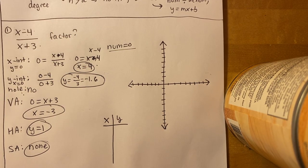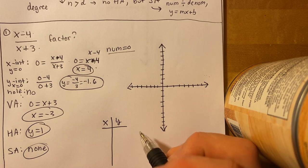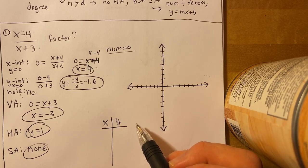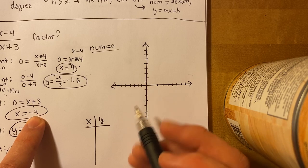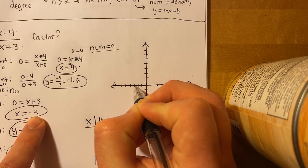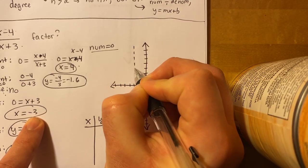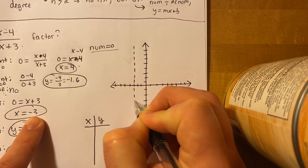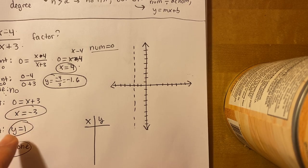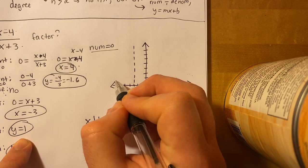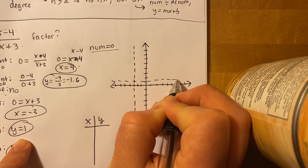Now we have enough information to graph. Step 1 is always to draw the asymptotes first. I have a vertical asymptote at x equals negative 3, so I'll draw a dotted line there. And then the horizontal asymptote at y equals 1 — another dotted line to represent that.